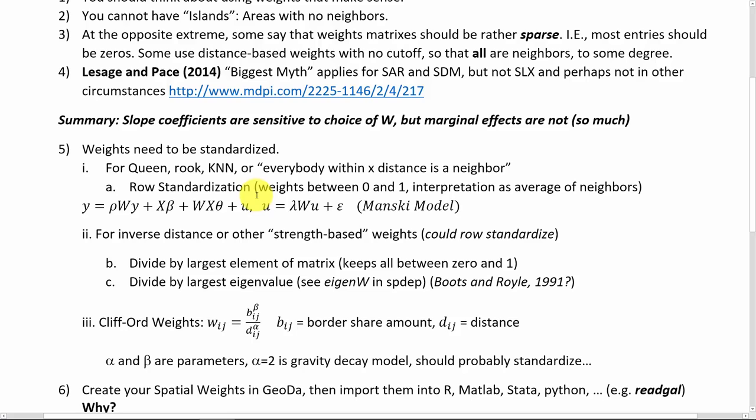If a region has five neighbors, then you make each of the weights, instead of one, you make them one-fifth. And what that does is it gives a fifth of the weight to each of my five neighbors. The good, simple, easy-to-understand thing about that is then you can interpret the lag variable that is going into the model just as a simple mean, simple average of the neighbor's values. Here's the Manski model, which we're never actually going to estimate, but it just gives the most complete representation.